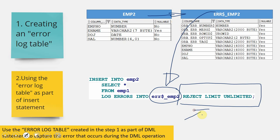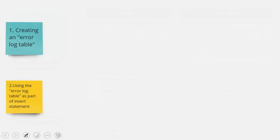Instead of REJECT LIMIT UNLIMITED, you can also specify a numeric limit. Up to that limit, Oracle will capture errors; beyond that limit, it will throw an exception. This is not only applicable to INSERT statements — it is applicable to all DML statements: INSERT, UPDATE, DELETE, and MERGE. Now let me show you a practical example covering the creation of the error log table and using it as part of INSERT, UPDATE, and DELETE statements.